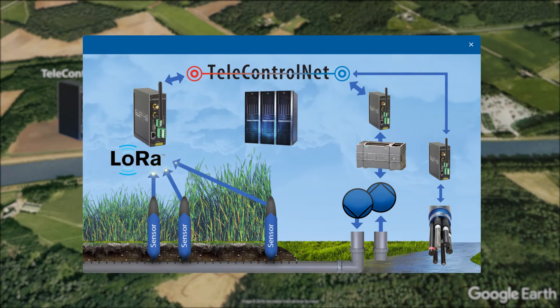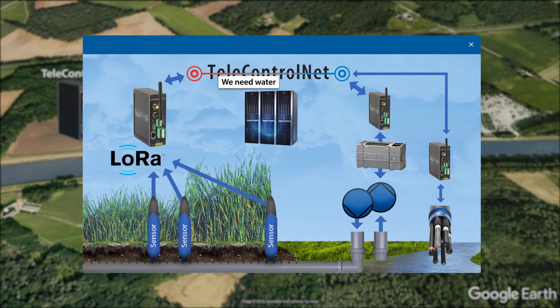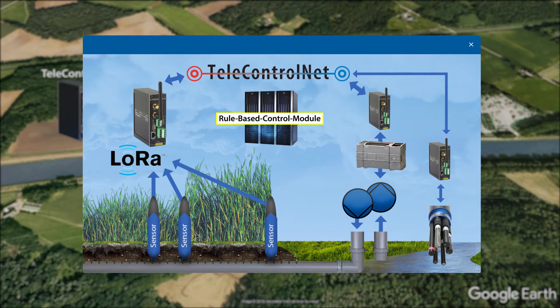First, the soil moisture sensors will send signals to the central telecontroller. The telecontroller forwards a message to the main server. Now the rule-based control module decides what action should be taken.